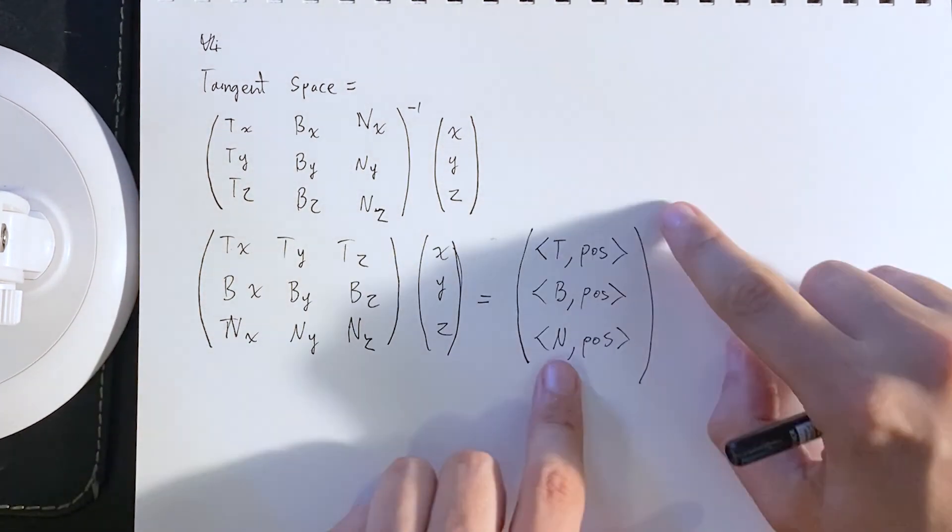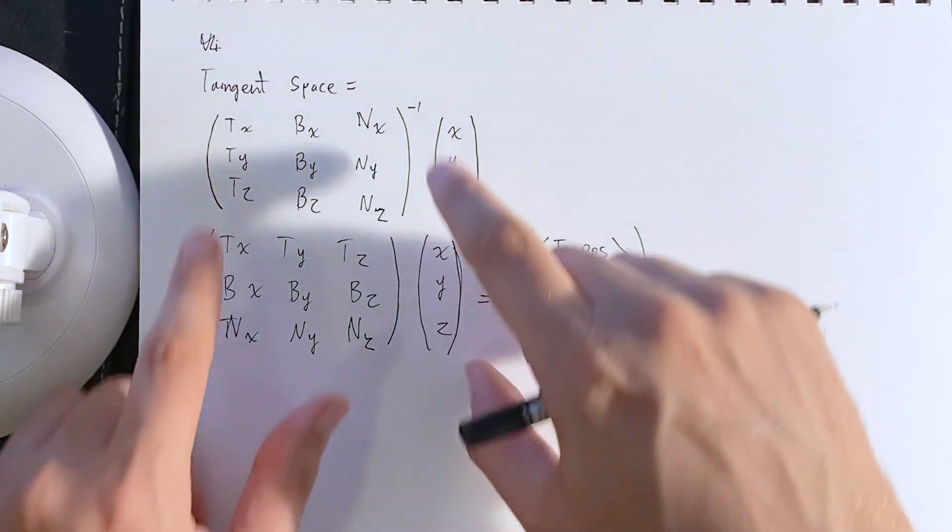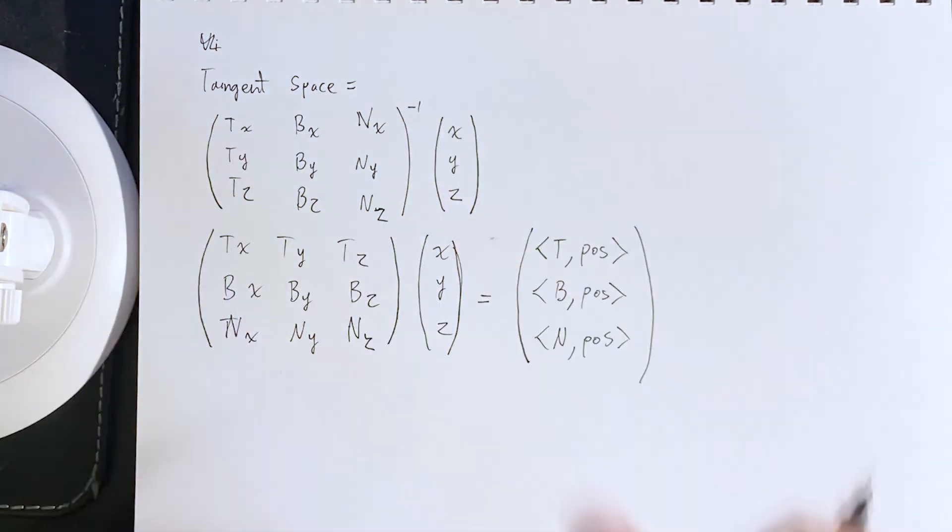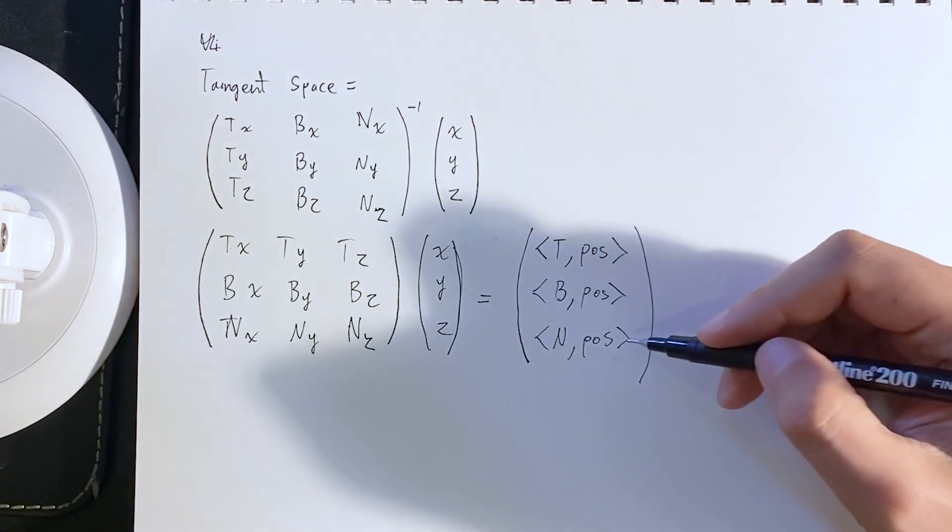We're simply going to take the transpose of the TBN matrix multiplied in. But I think it's cool that it comes out so nicely.